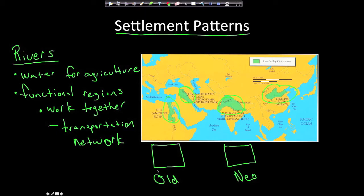Another point is how population density changed because of the Neolithic Revolution. Before the revolution, when people were hunter-gatherers and nomadic, the population density was very small — meaning very few people lived in a given area. You needed a lot of land to support people because you had to hunt animals to survive. You couldn't have too many people on the land, otherwise there wouldn't be enough animals to feed them.